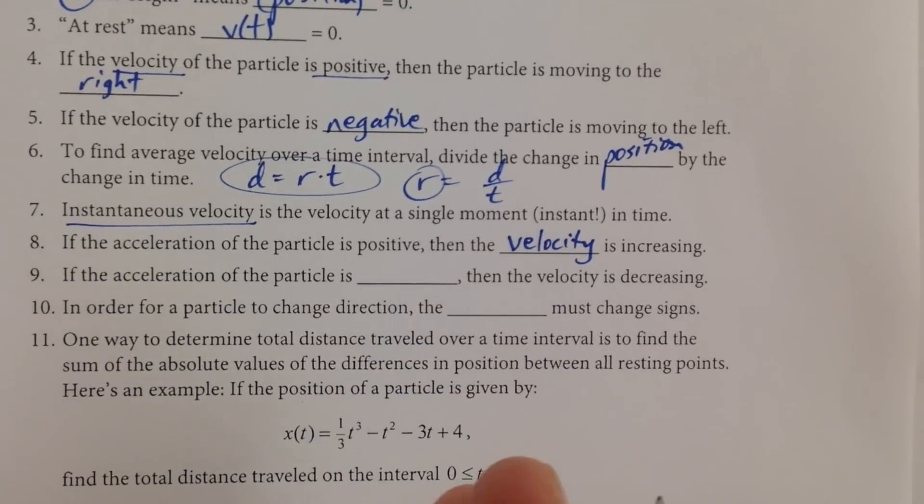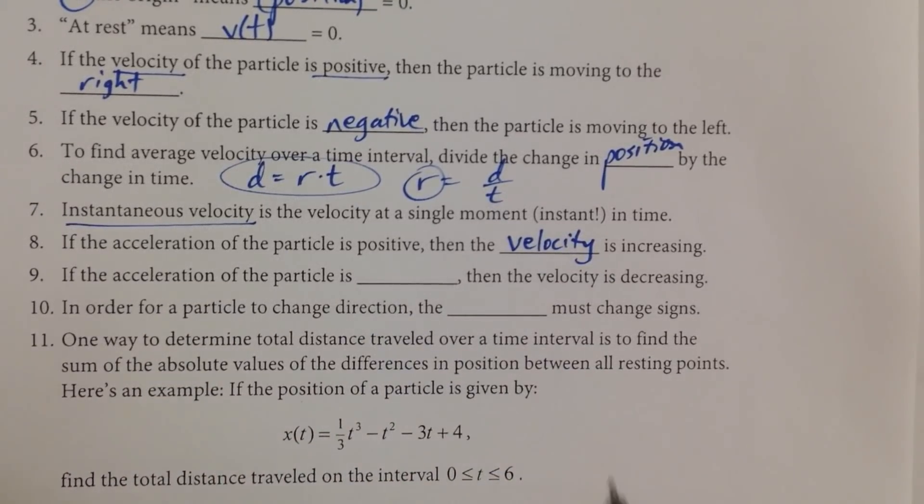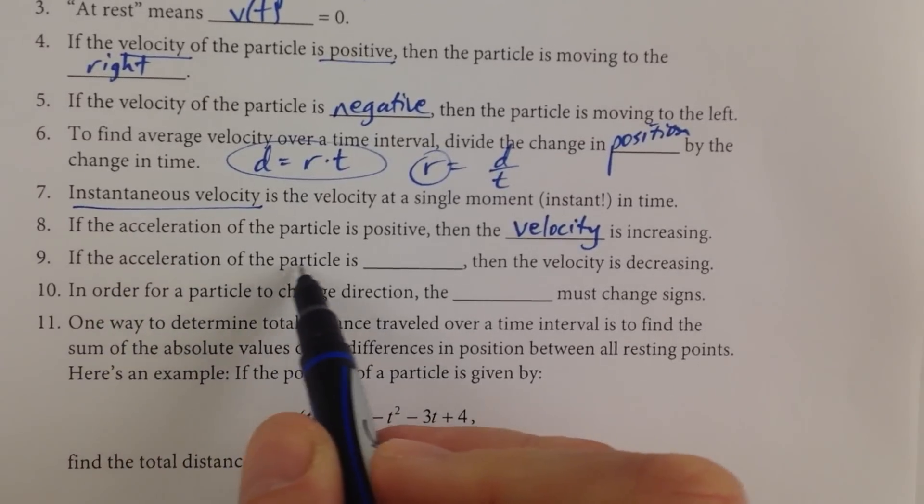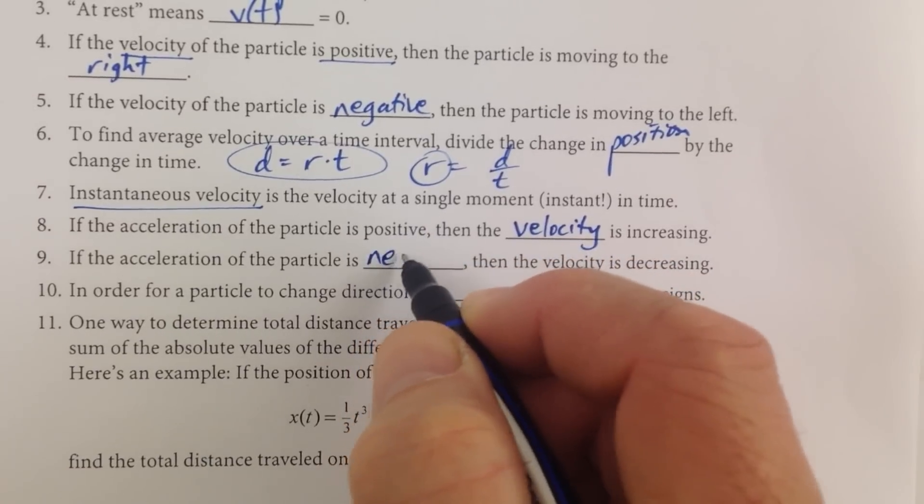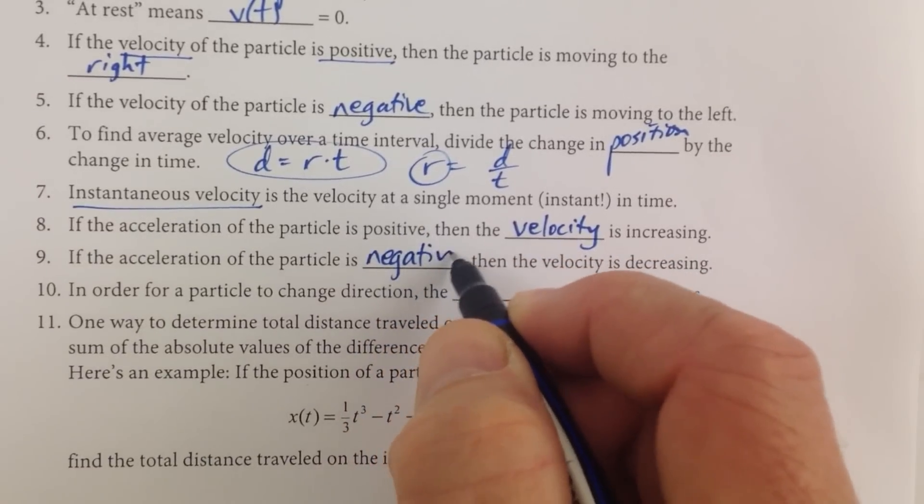Again, any function that is increasing, its derivative then would be a positive number. So if the acceleration of the particle is blank, then the velocity is decreasing. So if the acceleration is negative.